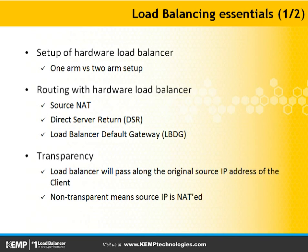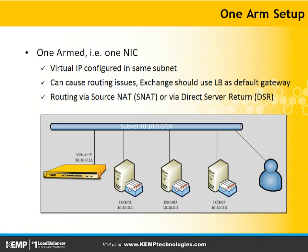Transparency is key. Transparency means: will the load balancer pass along the original source IP address of the client to the Exchange server? If not, it means that the source IP is NATted to the source IP of the load balancer. If you have a one-arm setup, the Exchange servers, the client, and the hardware load balancer are all configured in the same VLAN. This can cause some routing issues and Exchange should use the load balancer as the default gateway. Routing options are to use source NAT or to use direct server return.